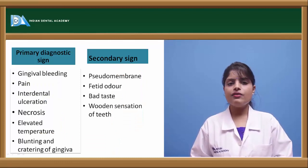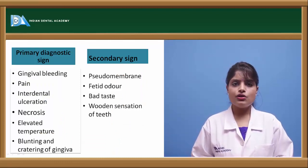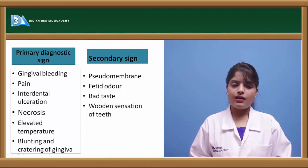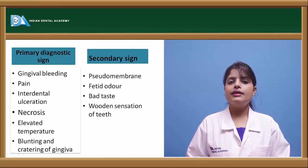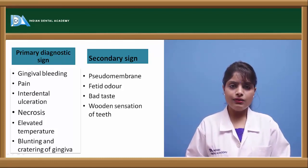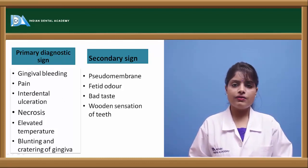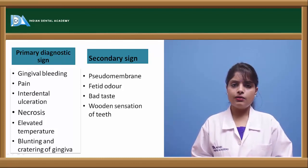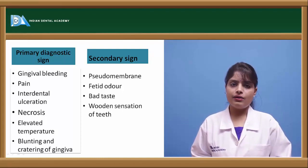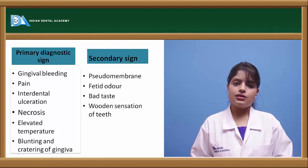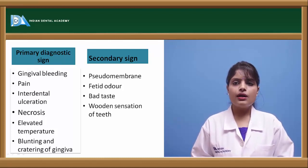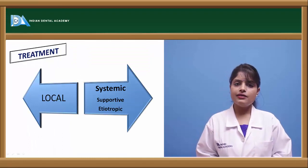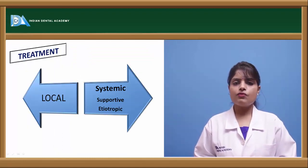Primary diagnostic features of ANUG include gingival bleeding, pain, deep crater-like interdental ulcerations, necrosis of the papilla, elevated temperature with moderate fever, and blunting or cratering of the gingival margin. Secondary features include a pseudomembrane — grayish-white slough covering the ulcers — very poor oral odor, and a wooden sensation of the teeth. Treatment can be local, systemic, supportive, or etiotropic.